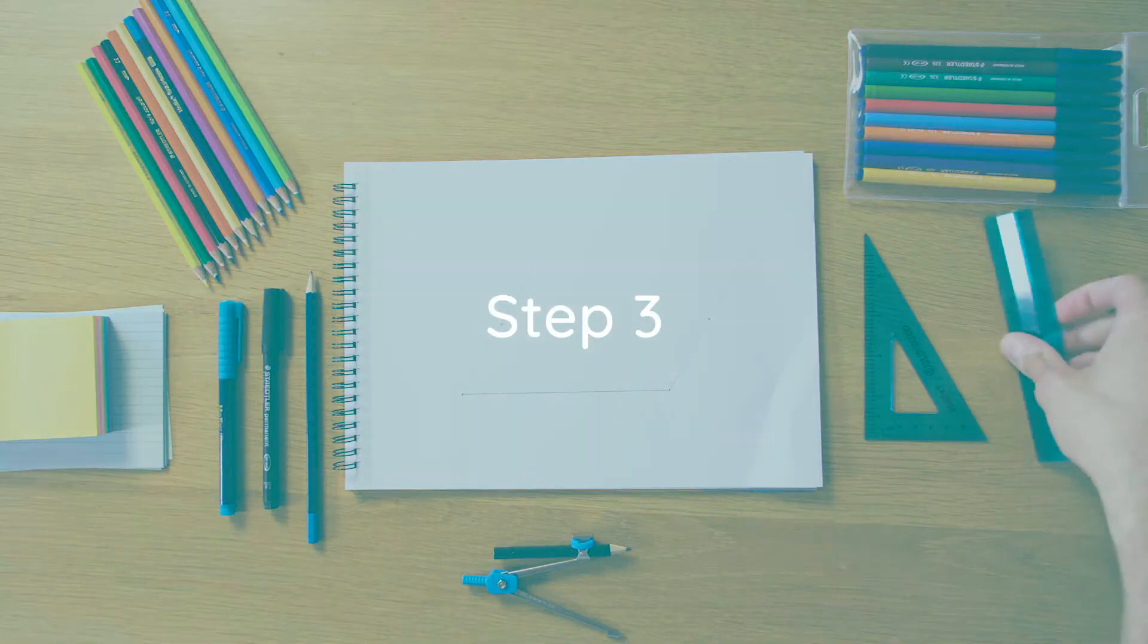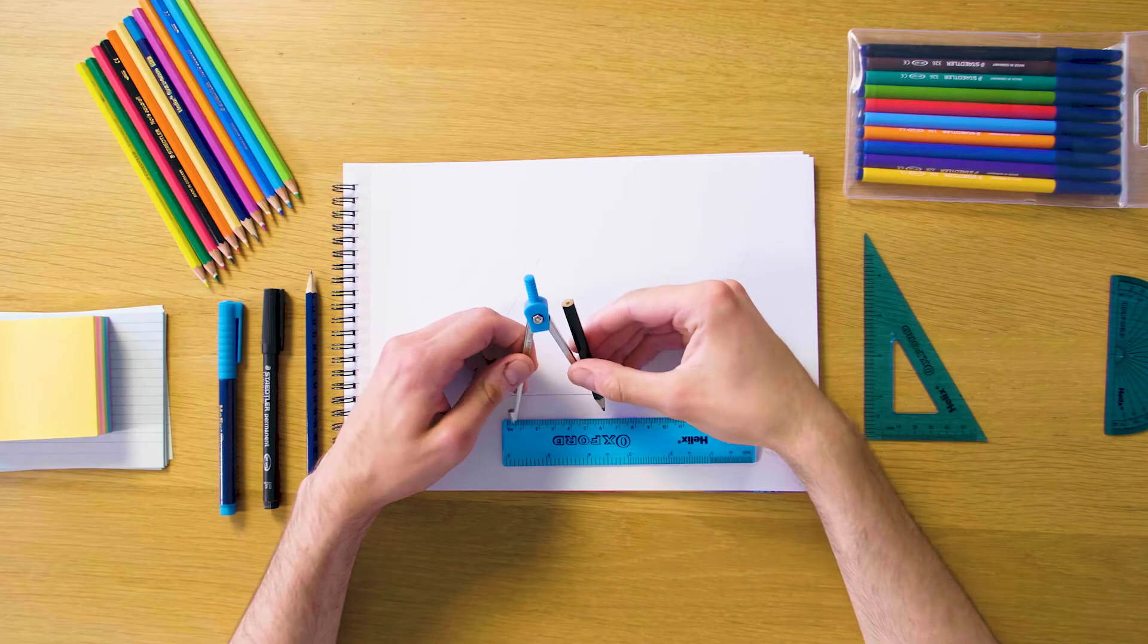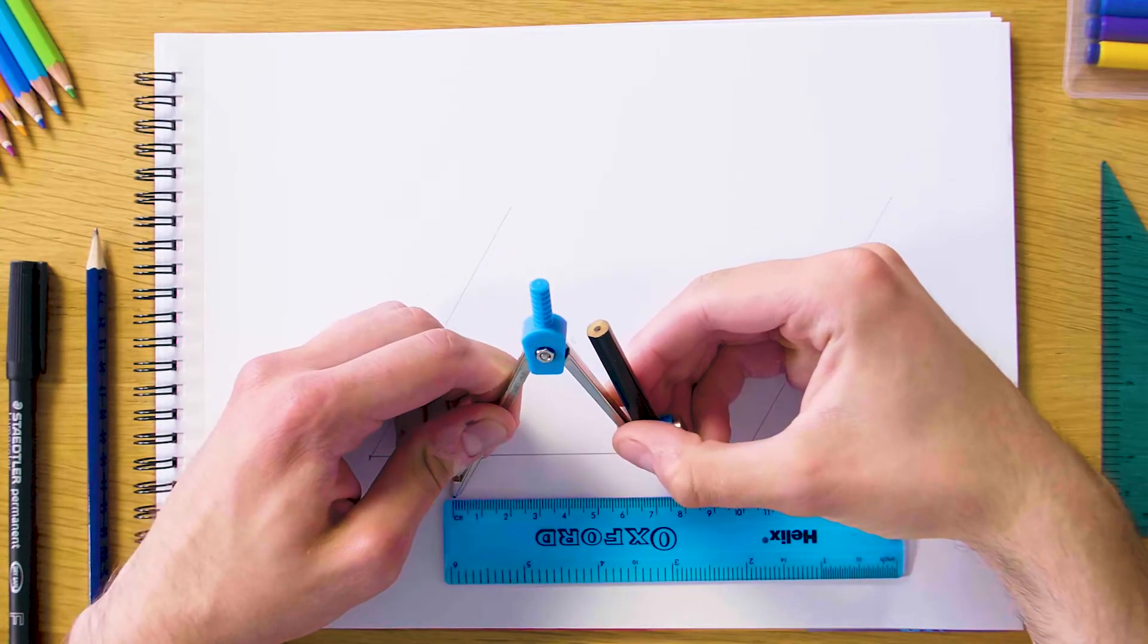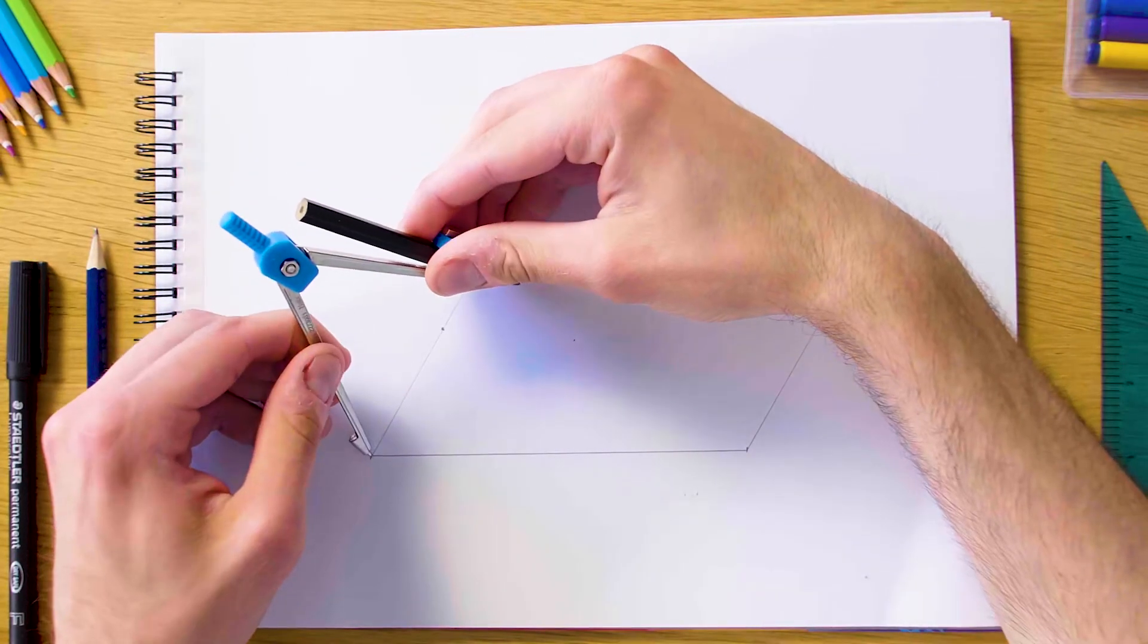So our next step now is going to be to grab our ruler and use our compass to set our side length and we know our second side length here is eight. So we're going to set our compass to be eight centimeters and we're going to swing this arc onto the construction line we did for step two.